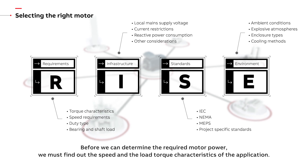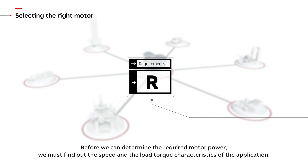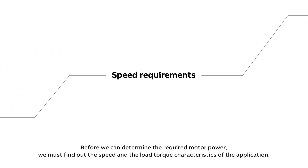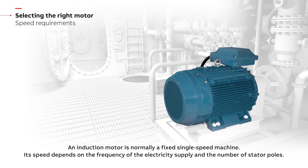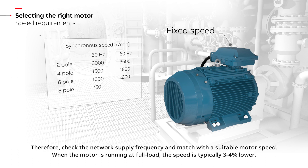Before we can determine the required motor power, we must find out the speed and the load torque characteristics of the application. An induction motor is normally a fixed single-speed machine. Its speed depends on the frequency of the electricity supply and the number of stator poles. Therefore, check the network supply frequency and match with a suitable motor speed.